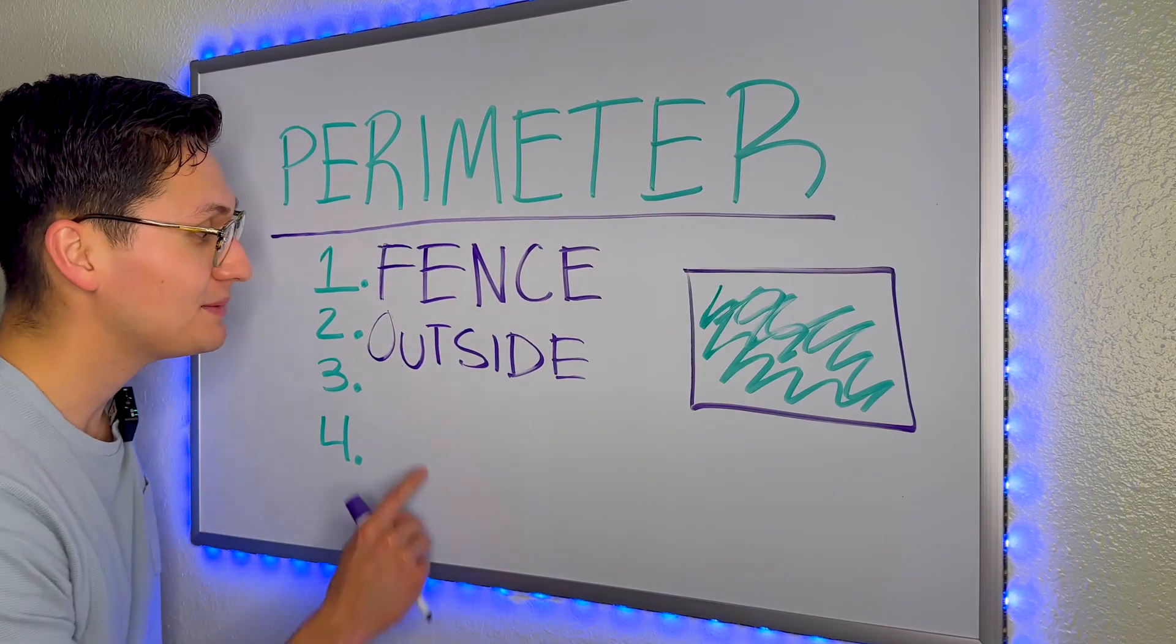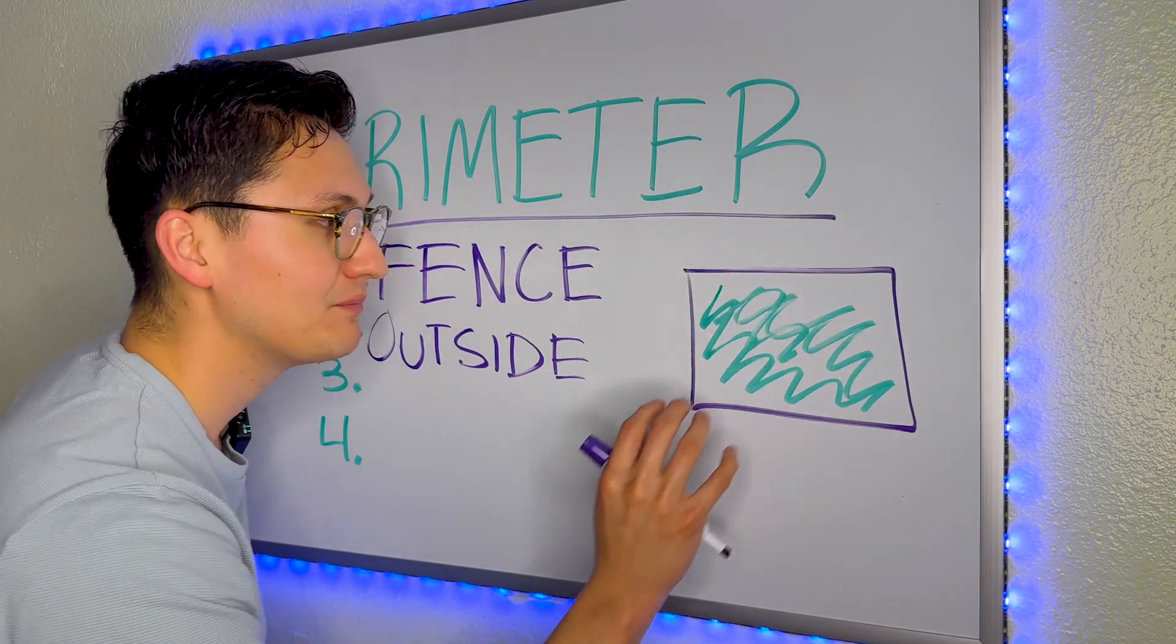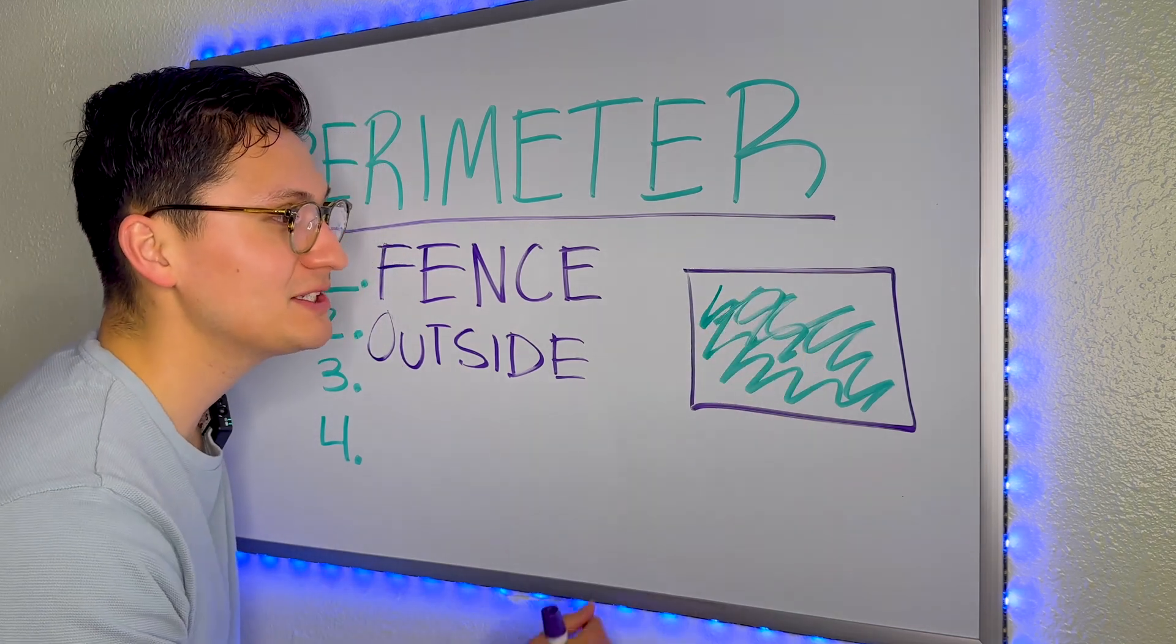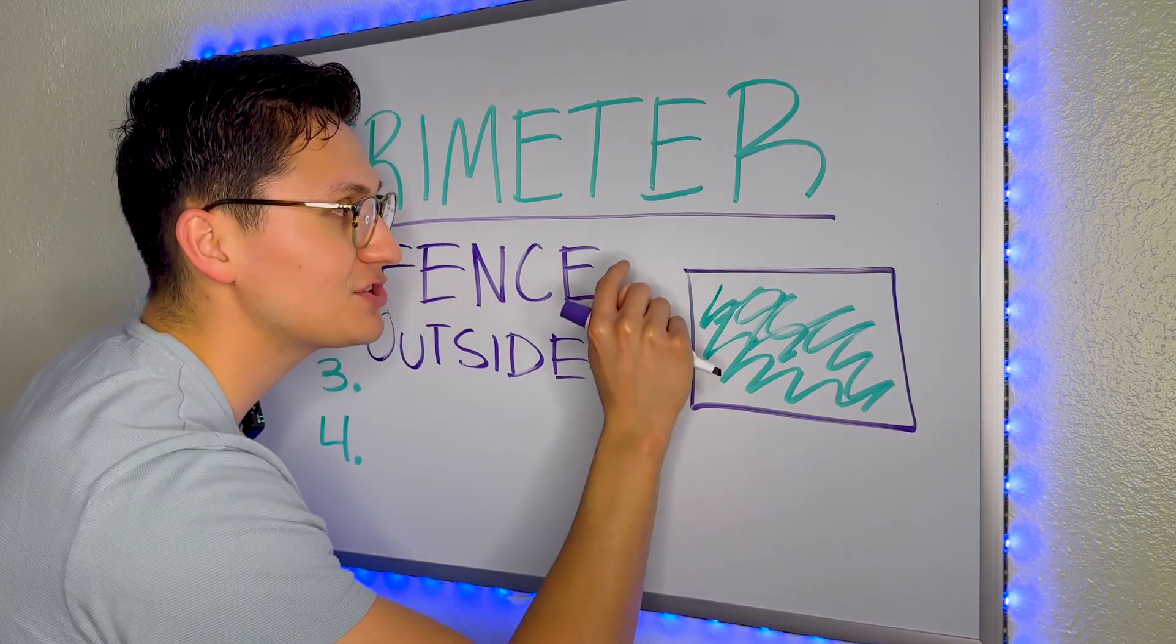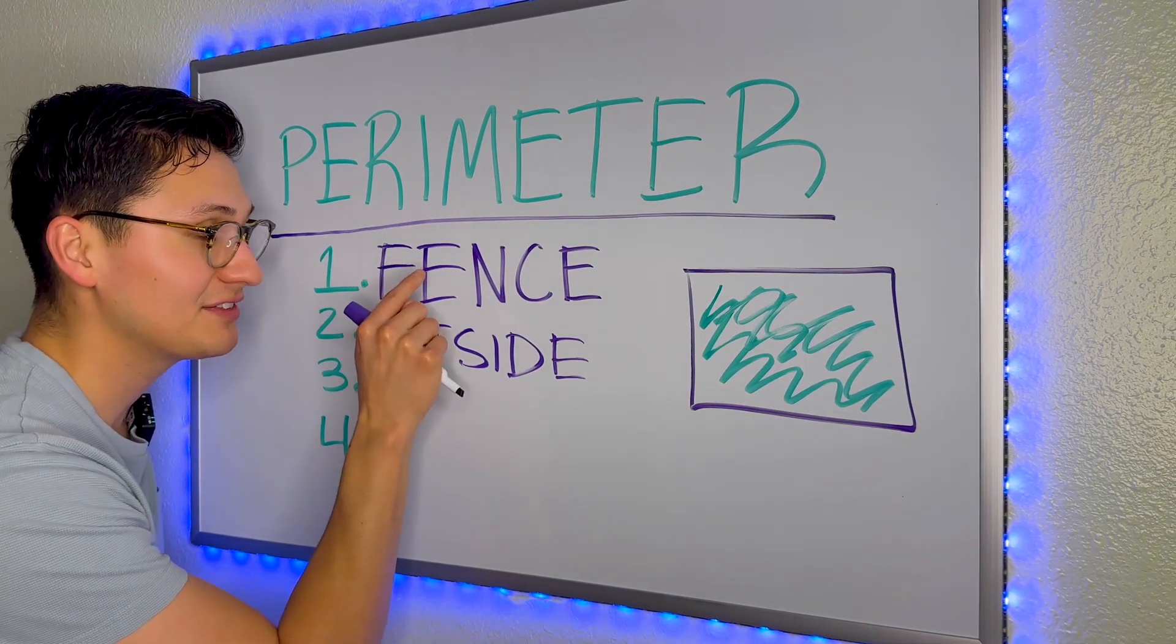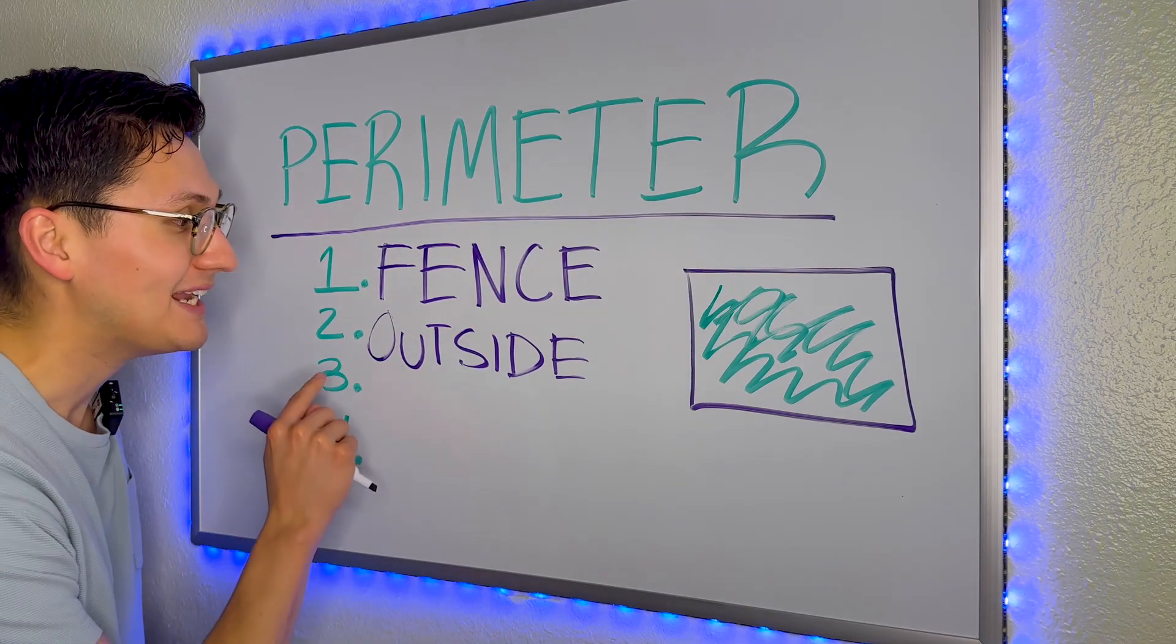The second word is going to be outside. So when we have a piece of land and we have a lot of grass inside, that is going to be the area, but the outside is going to be the perimeter. Just like the fence, another keyword to help you remember perimeter is outside.